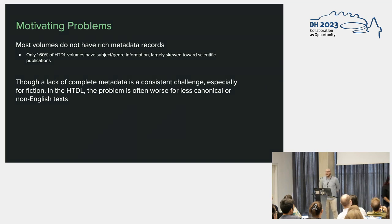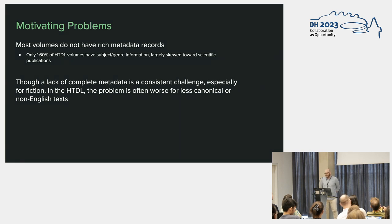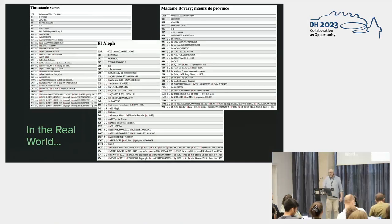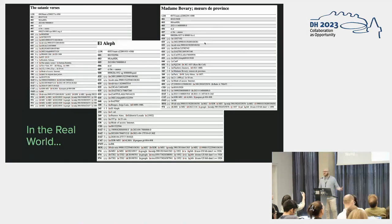But the reality is that most volumes do not have rich metadata records. Only about 60% of all volumes in the HDDL even have subject genre information assigned, and these volumes largely skew toward scientific publications — not so much literature. This problem is especially worse for literature that is considered non-canonical or non-English. We have two canonical texts — one Spanish and one French — neither has any subject information at all in their MARC record. And Satanic Verses by Salman Rushdie, not so canonical but in English, still has no genre information at all.